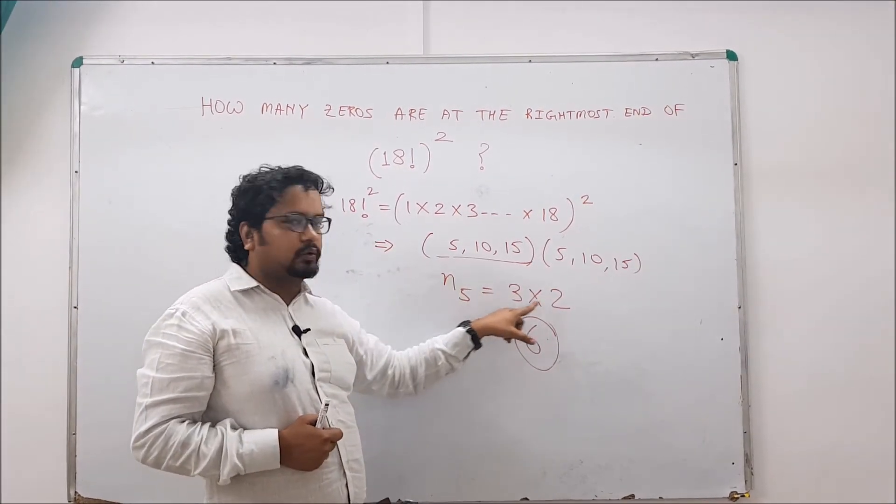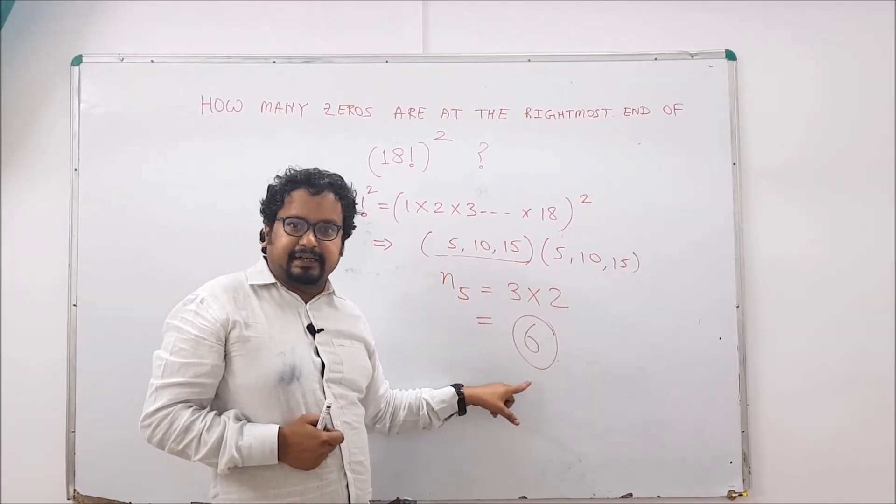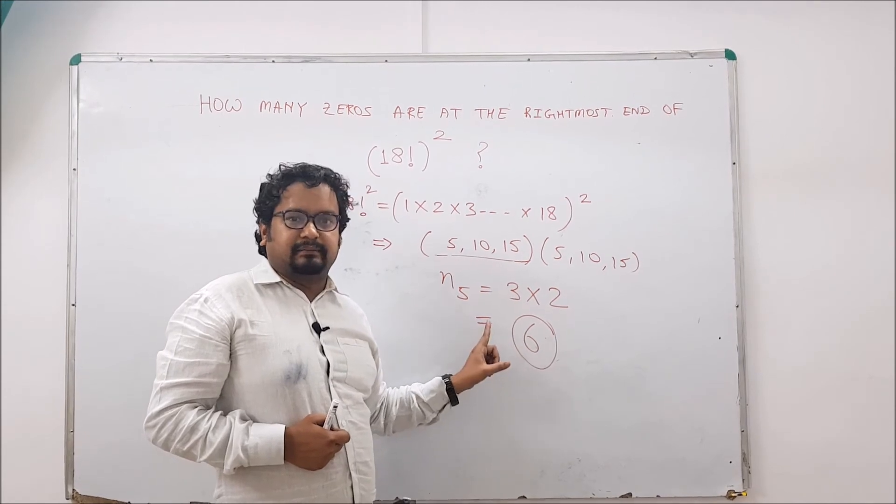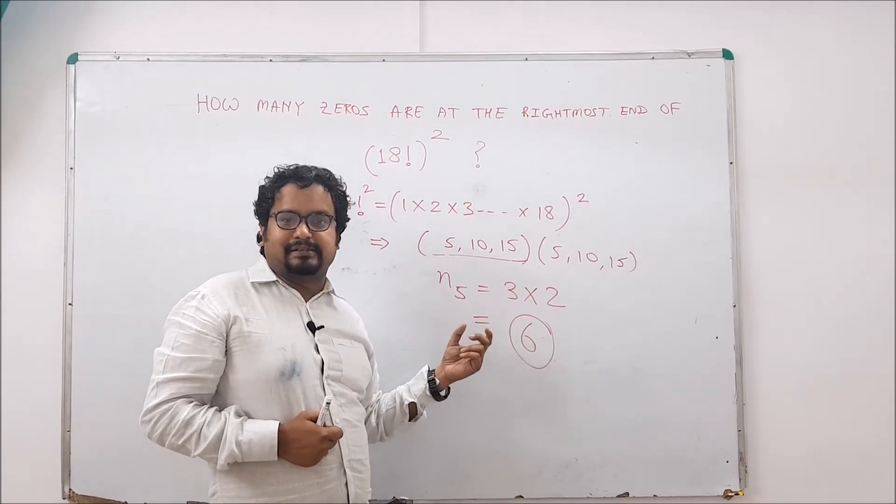So the total number of 5s is 3 times 2, that is 6. And that becomes the final answer. I hope the concept is clear. It's a simple concept. Thank you.